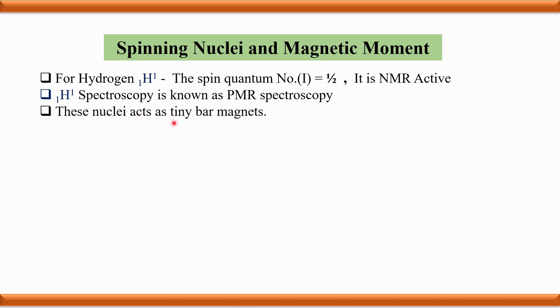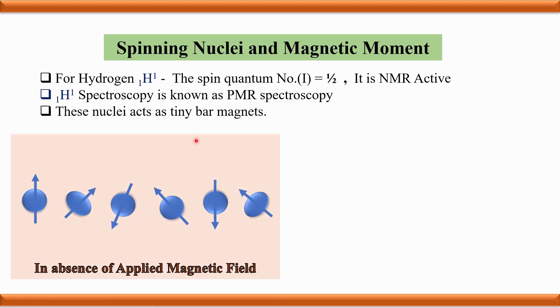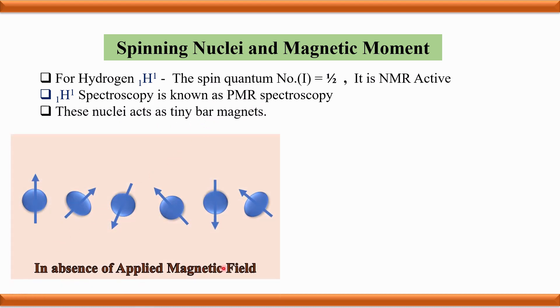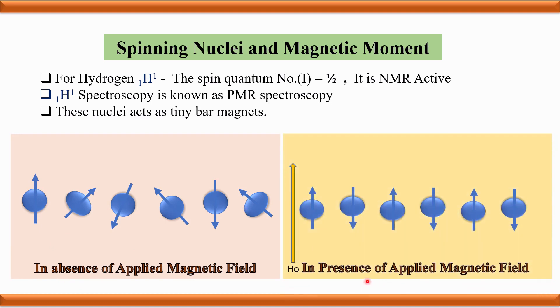Nuclei of hydrogen atoms act as tiny bar magnets. In the absence of an applied magnetic field, these nuclei orient in all possible directions in space. But if they are placed in an applied magnetic field, they have only two possible orientations: one parallel to the applied magnetic field and another anti-parallel to it.